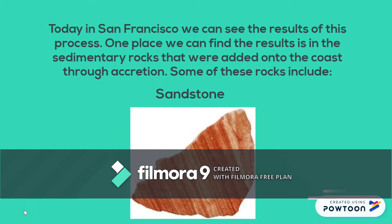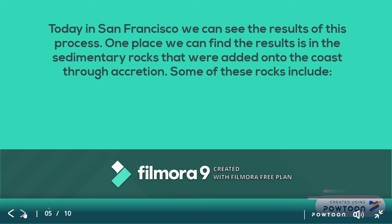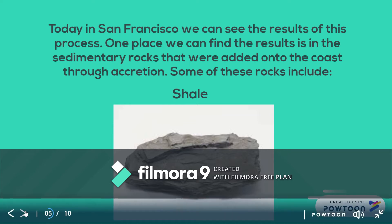Sandstone is a yellowish or reddish stone with very rough sides. It is easily scratchable and can have visible layers or no layers at all. And lastly, shale is a smooth, flat rock with a dark gray color that has visible layers. Shale is often found in very thin sheets.